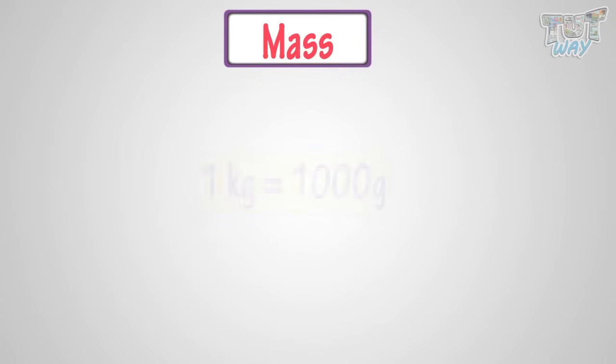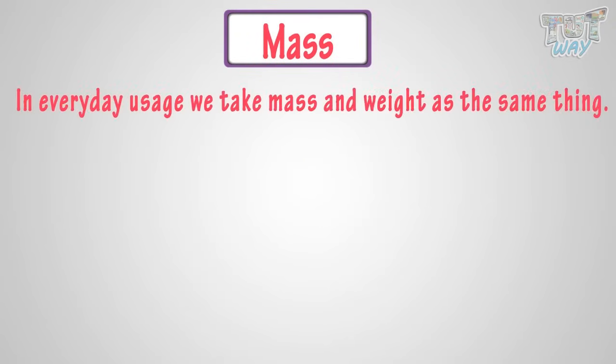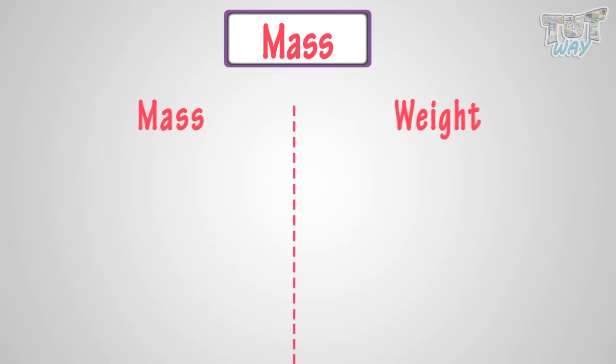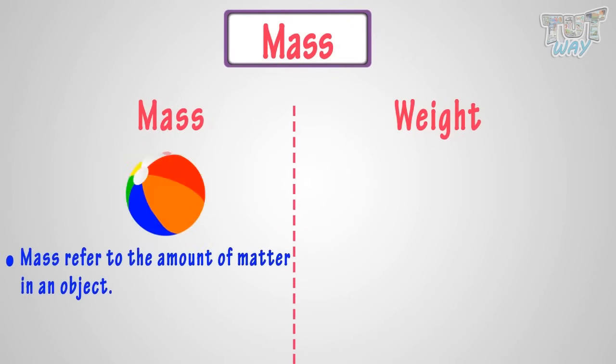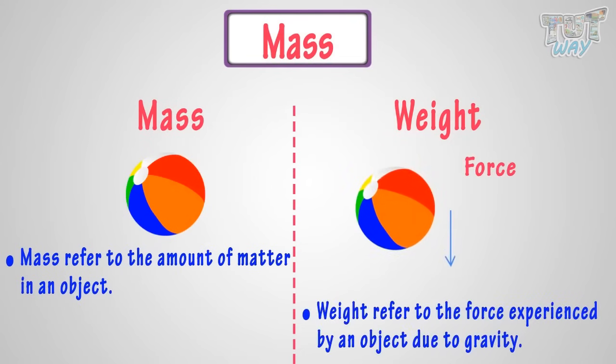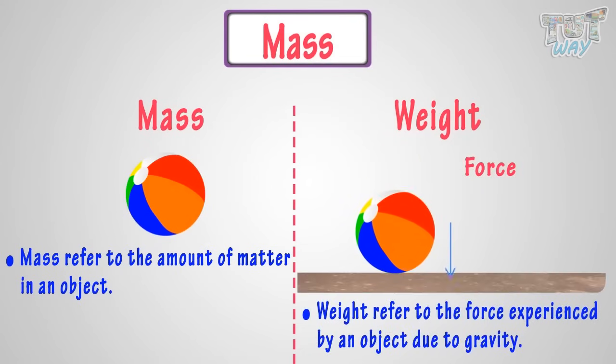In everyday usage, we refer to mass and weight as one and the same thing, but in fact, mass and weight are different quantities. Mass refers to the amount of matter in an object, and weight refers to the force experienced by an object due to gravity.